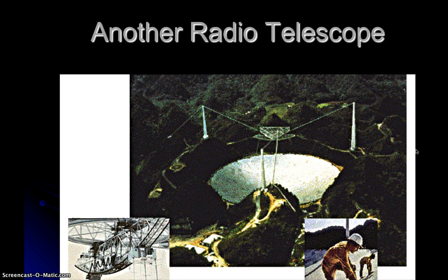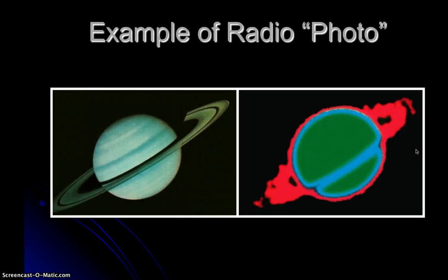This is a very large radio telescope — one that was located in Puerto Rico — and you can see that it's very, very big. The picture on the right is an example of what a radio telescope might see as it looks at Jupiter. Notice we have different colors representing different intensities, and you still see the general shape of Jupiter but with different features visible. Sometimes you get different information that you didn't see with your naked eye.